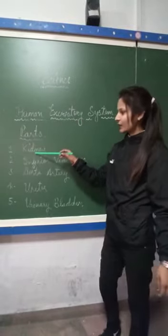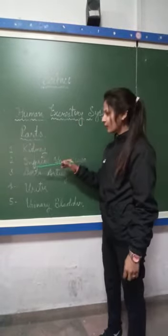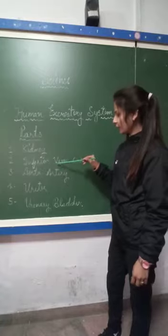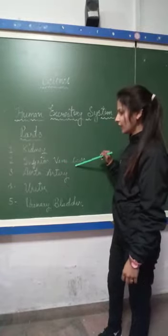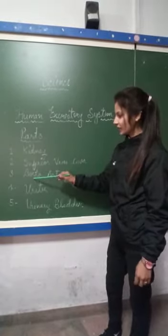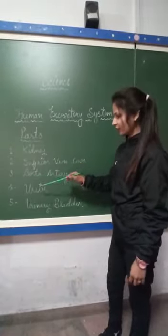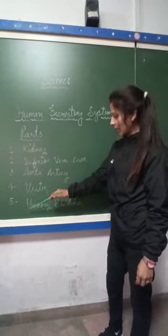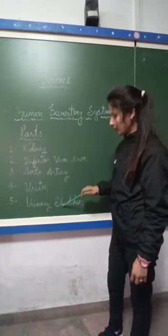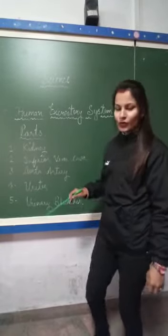The first one is kidney, the second one is inferior vena cava, the next one is aorta artery, the fourth one is ureter, and the last one is urinary bladder.